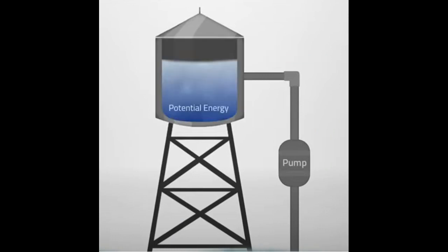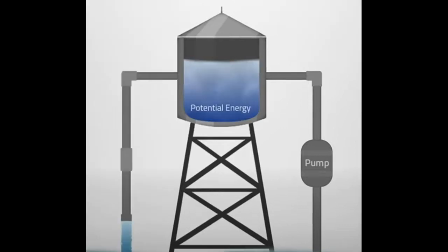Now the water tower has a large potential energy to do a work, but it is not releasing that energy. To use this potential energy, another pipe is connected to the tank to complete the circuit and produce a current.